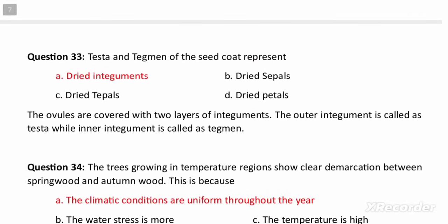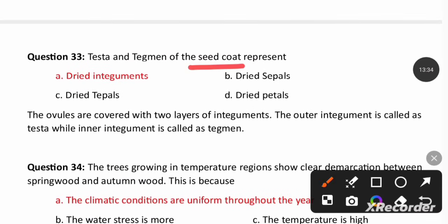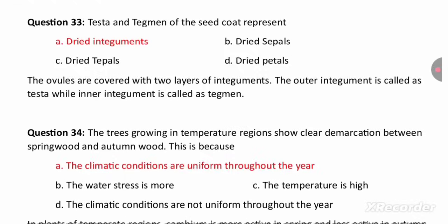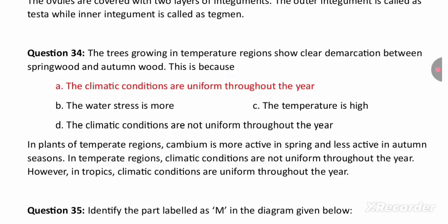Testa and tegmen of the seed coat are the dried integuments. Around the ovule, there are layers called integuments — the outer layer is testa and the inner layer is tegmen. They form the seed coats after fertilization.